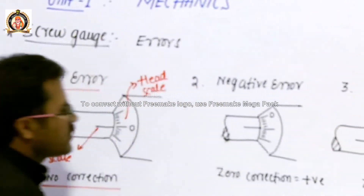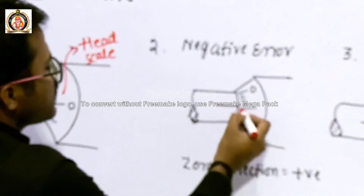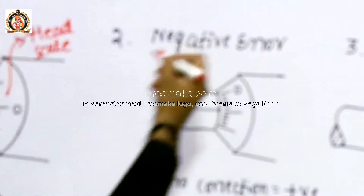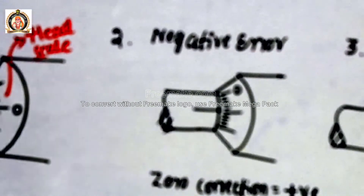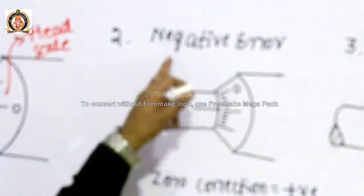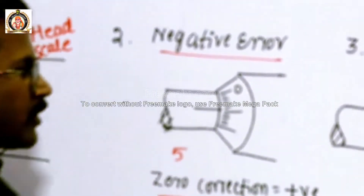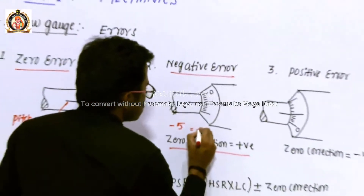Next, negative error. In the case of negative error, the zero of the head scale lies above the pitch scale. If the zero of the head scale lies above the pitch scale, then it is known as negative error. The correction in this case is positive. So suppose a screw gauge has a negative error of 5; that means minus 5, and the correction we apply is plus 5.